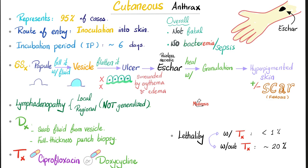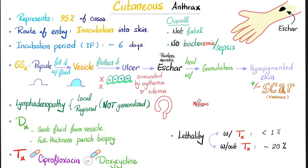The ulcer is surrounded by erythema and edema — redness and swelling — because of acute inflammation. The cardinal signs are redness, hotness, swelling, pain, and loss of function. Eventually you get a painless necrotic eschar — that's why we call it anthrax, because it looks like coal. It can heal with granulation tissue, leaving hyperpigmented skin, plus or minus healing by fibrosis known as scar tissue. You can get lymphadenopathy with cutaneous anthrax — usually a local or regional lymph node, but most of the time it's not generalized lymphadenopathy.